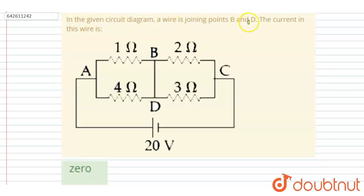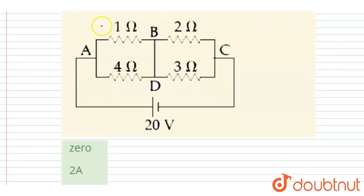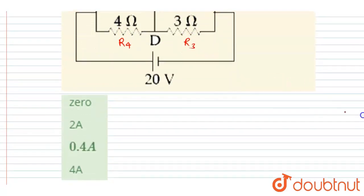You have to find out the current in this wire. You can see here there are four resistors — let's say this is R1, this is R2, this is R3, and this is R4. R1 and R4 are connected in parallel, and R2 and R3 are connected in parallel. The potential drop across this resistance is given as 20 volts.